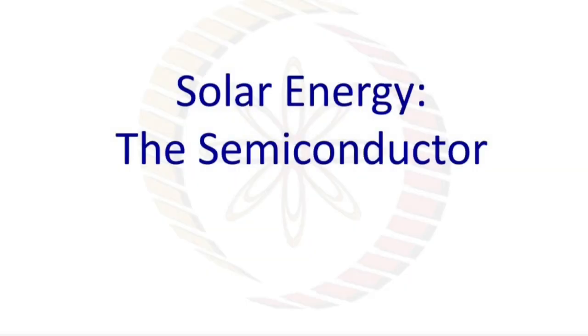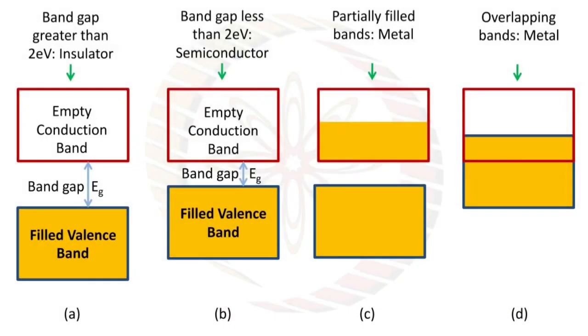We have to see what is insulator, what is semiconductor, and what are metals. If the band gap is greater than 2 electron volts between empty conduction band and filled valence band, it is known as insulator. When we have less than 2 electron volts, it is semiconductor. When partially filled bands or overlapping bands, then it's metal.